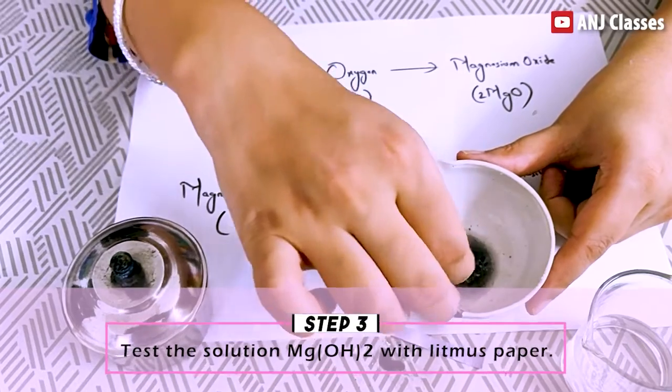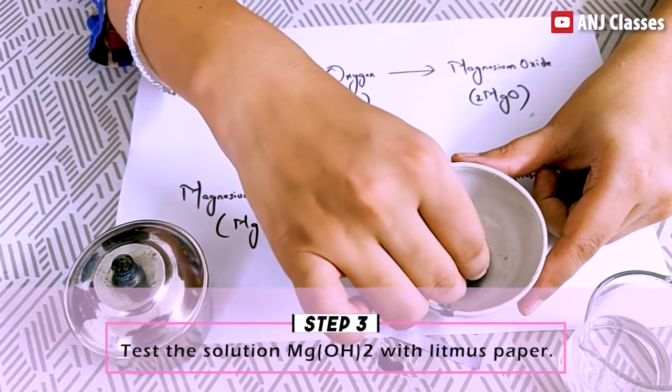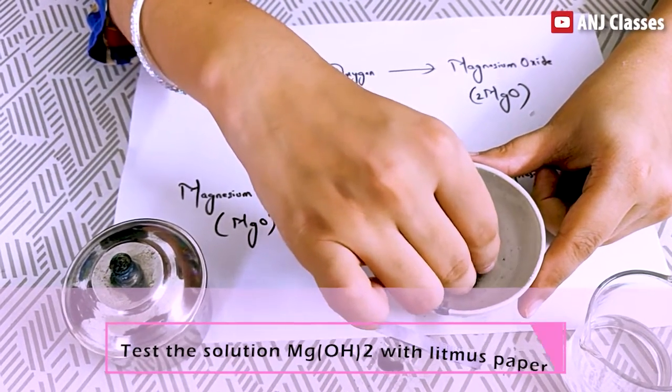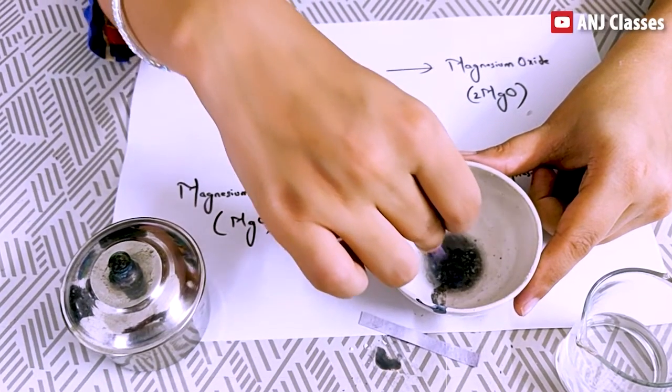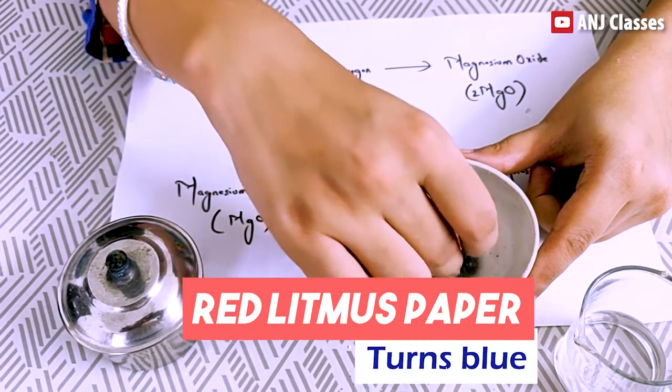Now I will test with red litmus paper. You will see red litmus paper. It turns blue.